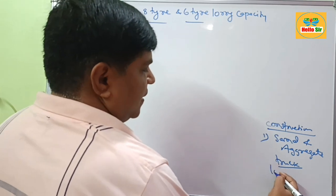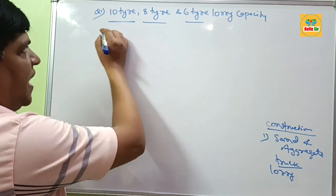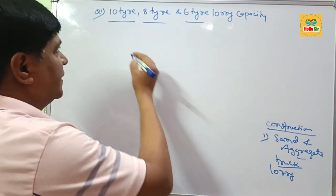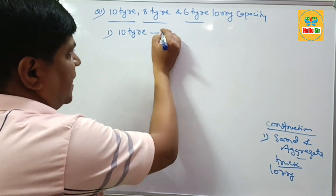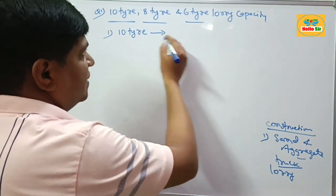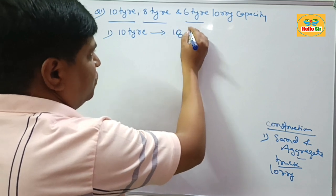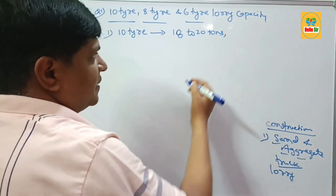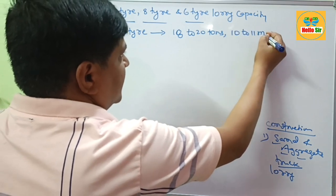Trucks and lorries have different dimensions depending on whether they contain 10, 8, or 6 wheels. The 10-tire truck has the capacity to haul about 18 to 20 tons of material such as sand and aggregate. If we measure this in cubic meters, this will be 10 to 11 cubic meters.